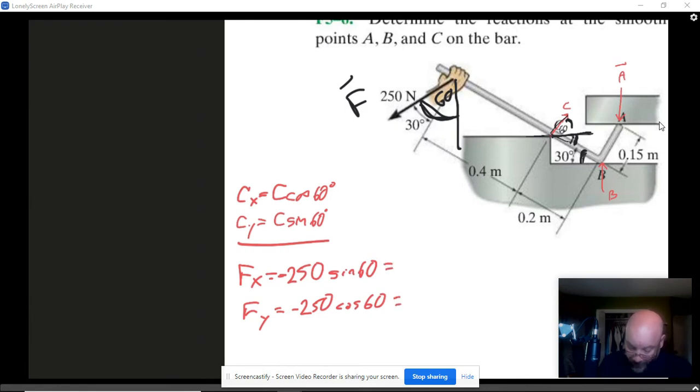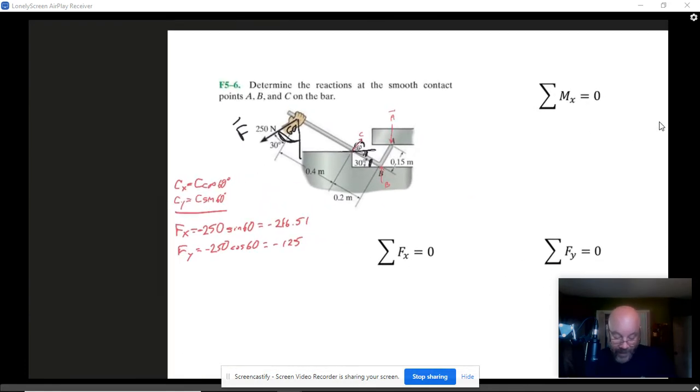We might as well do the math on that. When you do that, what you end up getting is that the X component is minus 216.51 to hold onto lots of digits there, and the other one is minus 125. So now we've broken down our support forces and we've looked at the externality, the force F. Now we're ready to get into using our FX, FY and moment equations.